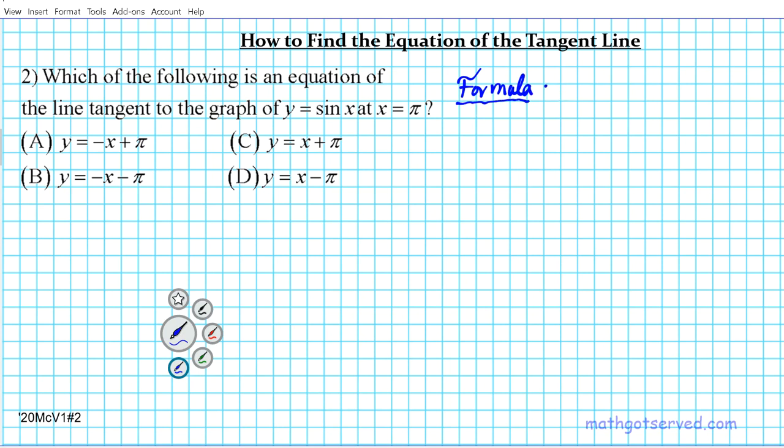To get us started, let's write down the formula that's going to guide our problem solving process. The formula for the equation of the tangent line is Y minus Y1 equals M times X minus X1. This is the equation of a line, called the point slope form from algebra.